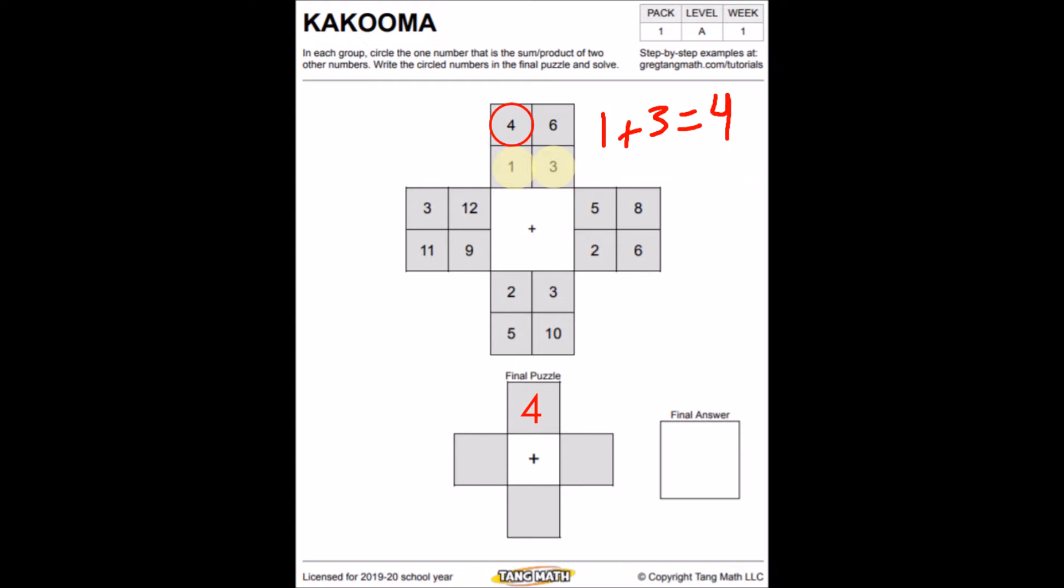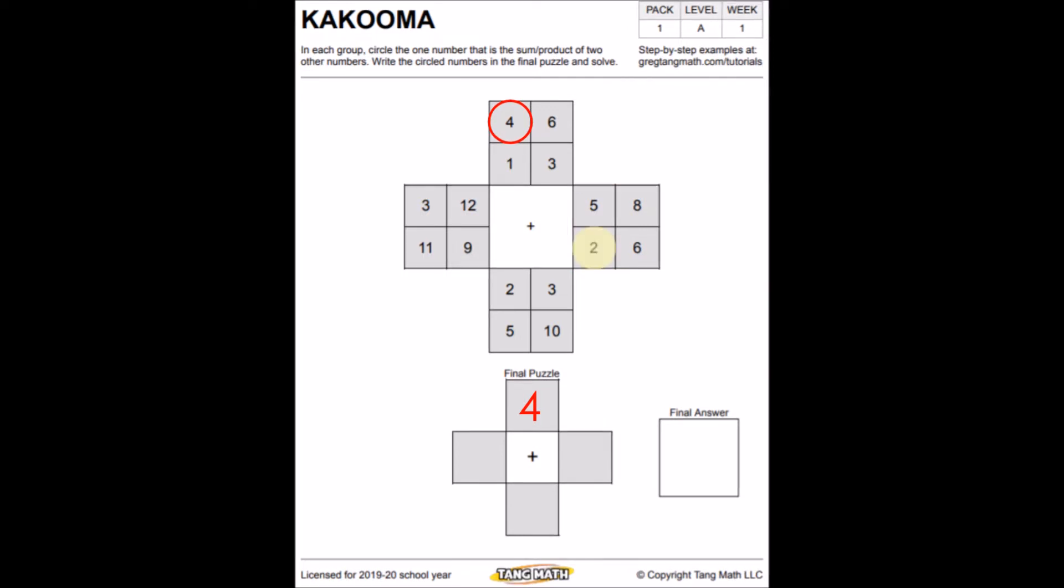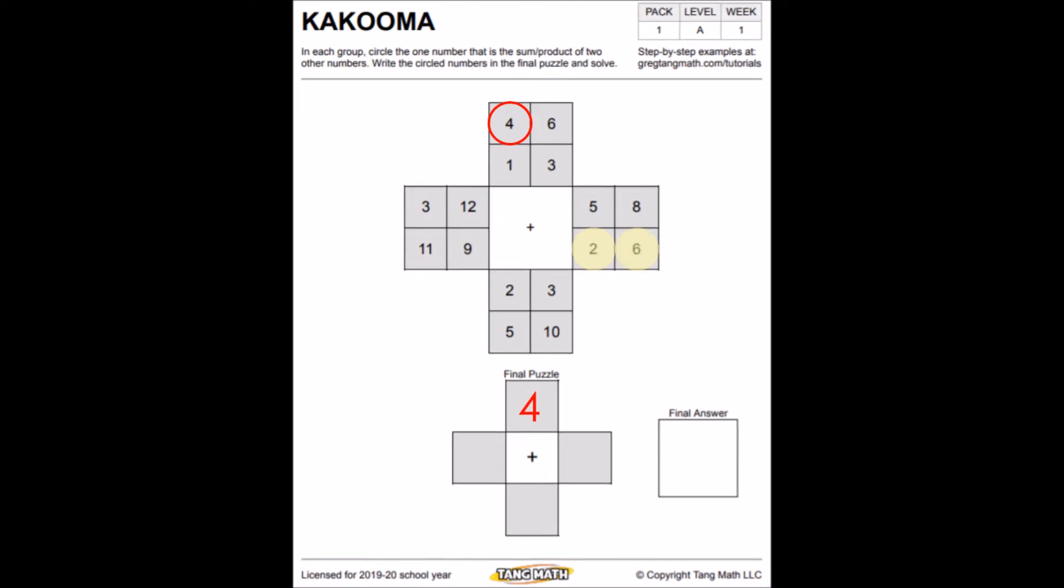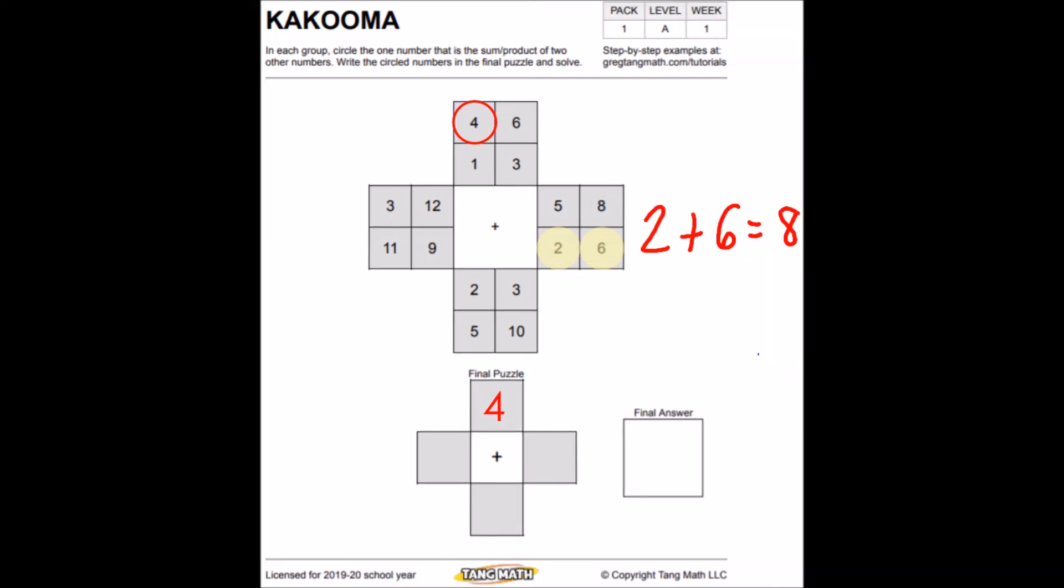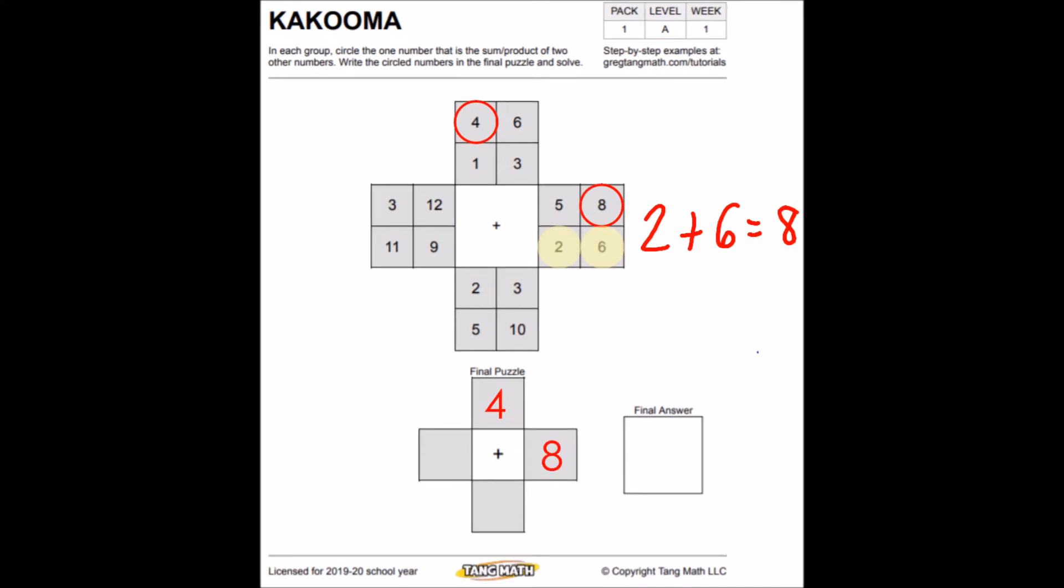Now let's go on to the box on the right. Again, you can go in any order. I'm just going clockwise. Let's try our strategy of looking at the two smallest numbers. So we have two and six. Two plus six, what is that? If you want to pause and figure it out, you can. Well, two plus six is eight and eight is another number in the box. So we're going to write eight in our final puzzle spot down below.